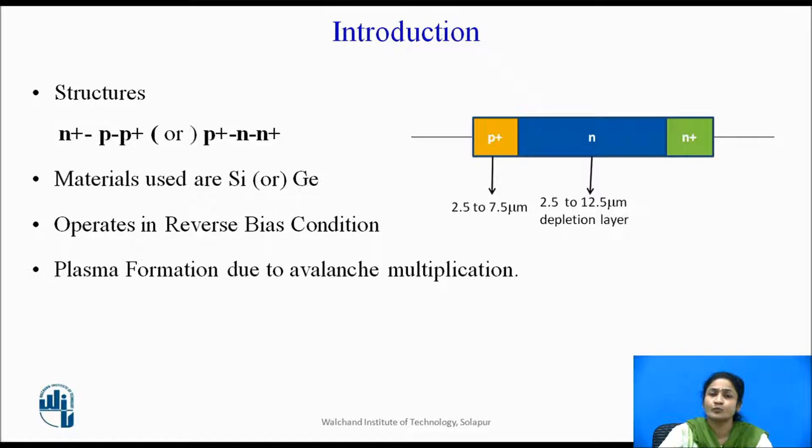varies from 2.5 to 12.5 micrometer. The width of this diode is around 50 micrometer. The material used for designing of this is not gallium arsenide, but it is designed by using either silicon or germanium.